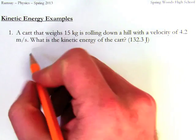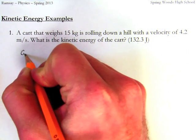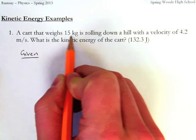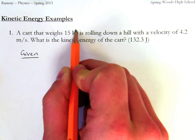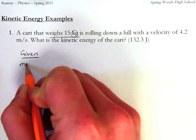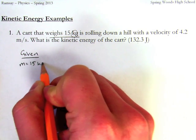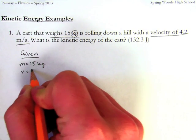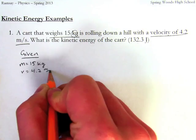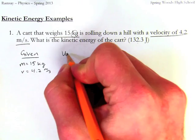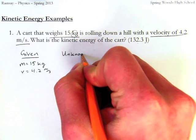So we're given the mass of the cart. It says it weighs 15 kilograms, but I know kilograms is a unit for mass. So the mass is 15 kilograms. The velocity is 4.2 meters per second. And that's all I'm given. What's the kinetic energy of the cart? Well, my unknown is going to be kinetic energy.